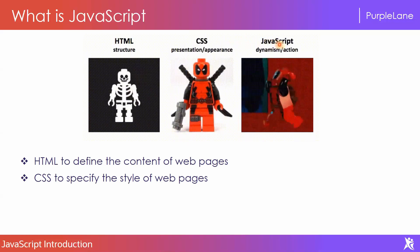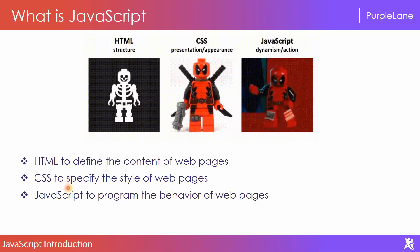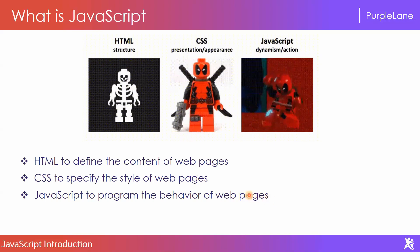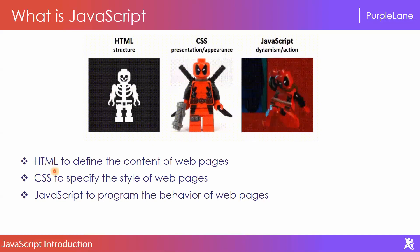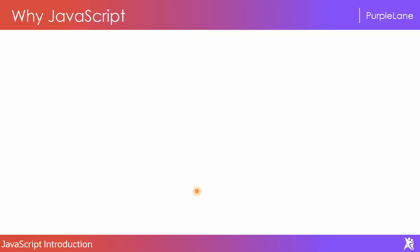JavaScript is used to program the behavior of web pages. For example, if you have a login form with a login button, whenever you click the login button a pop-up will come asking for a username and password. The form itself is defined in HTML and CSS, but the behavior — the pop-up automatically appearing — is achieved with JavaScript. We write a program inside the web page so that whenever you click a button, a pop-up will come.